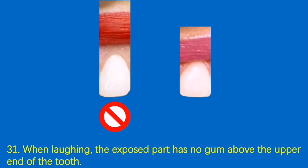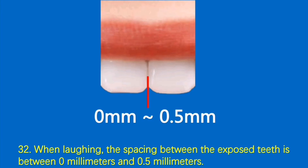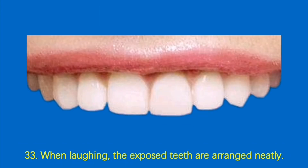31. When laughing, the exposed part has no gum above the upper end of the tooth. 32. When laughing, the spacing between the exposed teeth is between 0 mm and 0.5 mm. 33. When laughing, the exposed teeth are arranged neatly.